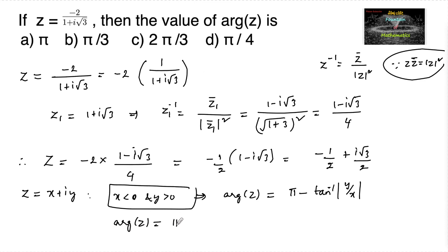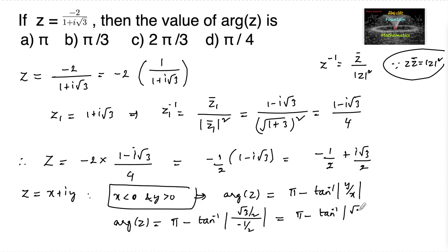Argument of z is equal to pi minus tan inverse of mod of root 3 by 1, which is equal to pi minus tan inverse root 3. Since tan inverse root 3 equals pi by 3, we get pi minus pi by 3, which is equal to 2 pi by 3. So the answer is 2 pi by 3, which is the third option.